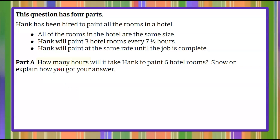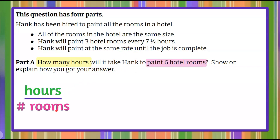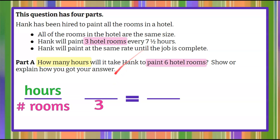Welcome back. We're going to determine how many hours it's going to take Hank to paint six hotel rooms. The rate we're talking about is hours to paint number of rooms. We're going to write a proportion, which is two equivalent ratios. One has been given to us: Hank paints three hotel rooms every seven and a half hours, so the rate is seven and a half hours to paint three rooms.